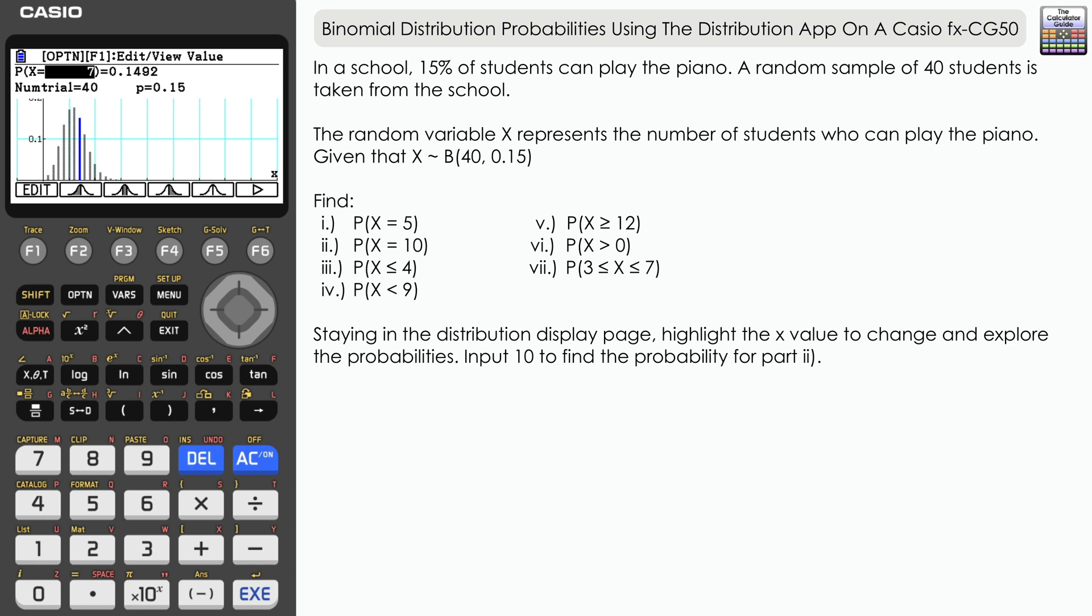The second probability that we need to find is X equals 10. So let's input 10, and we can see the probability here 0.0372, about a 3.7% chance of finding 10 students who can play the piano.